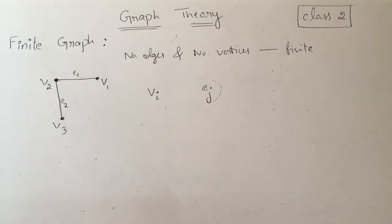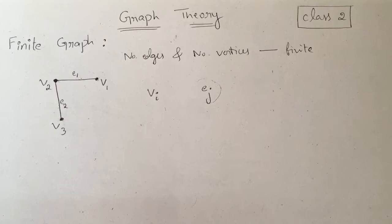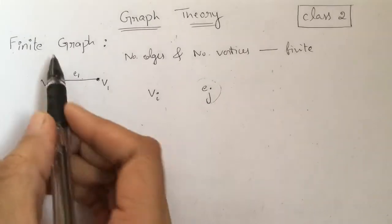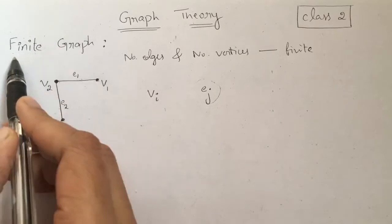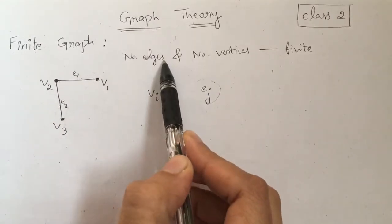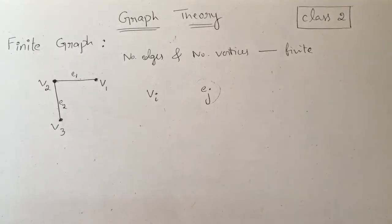Today we will discuss a few more properties of graphs. A simple graph, which I mentioned in my last class, is a graph which has no self loops and no parallel edges. Next is a finite graph: a finite graph is a graph in which the number of edges and the number of vertices are finite.